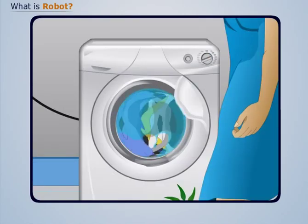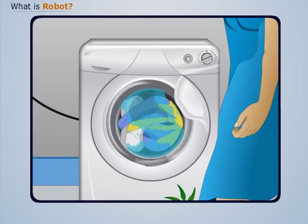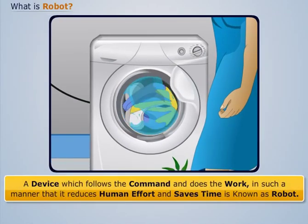The washing machine uses water and soap to wash the clothes and automatically dries them when cleaned. Such a device which follows the command and does the work in such a manner that it reduces human effort and saves time is known as robot.